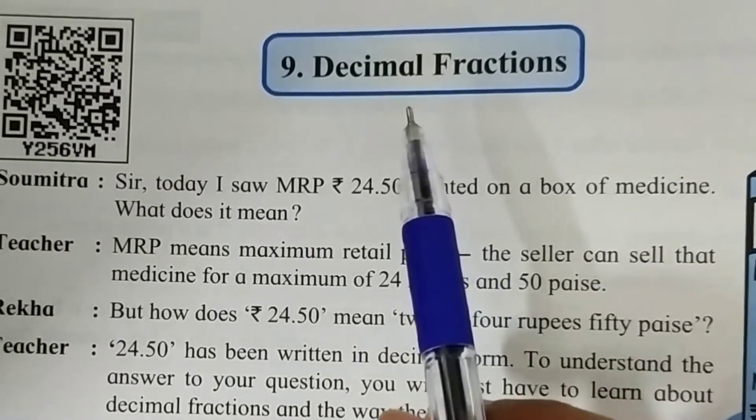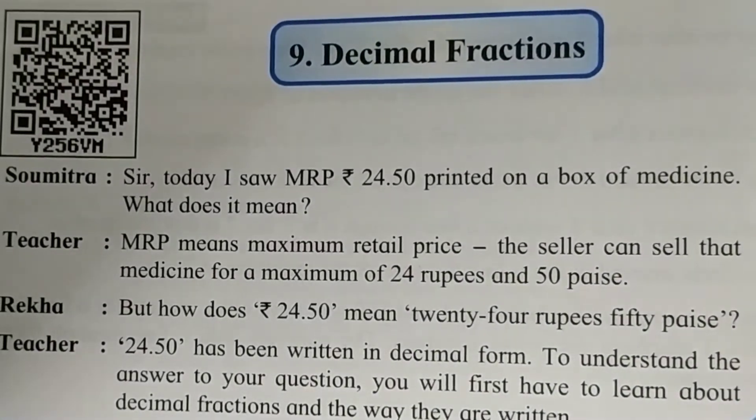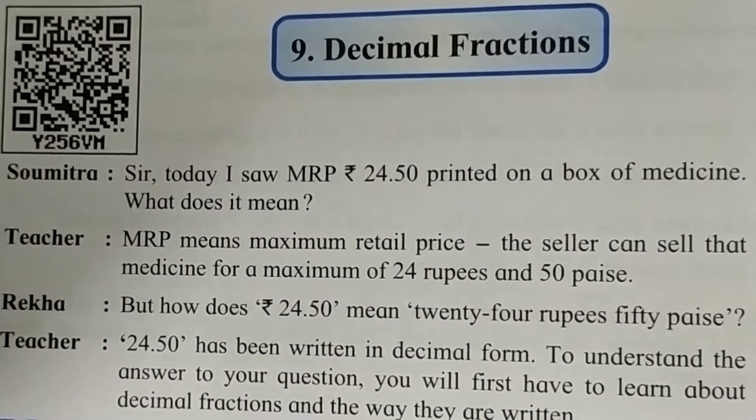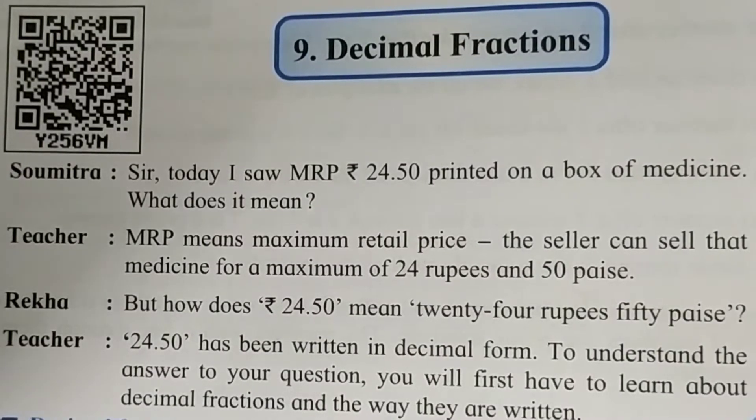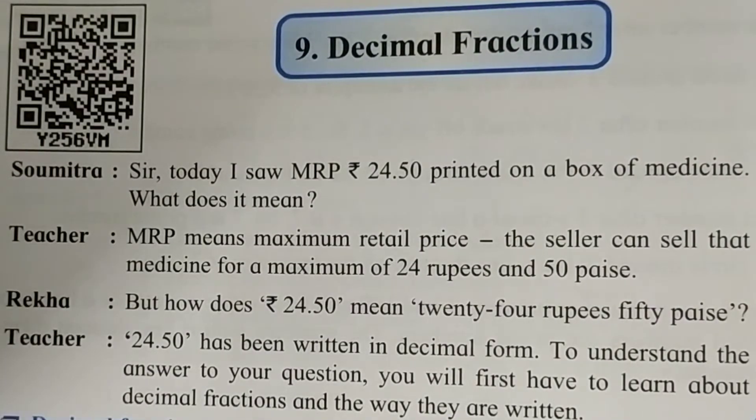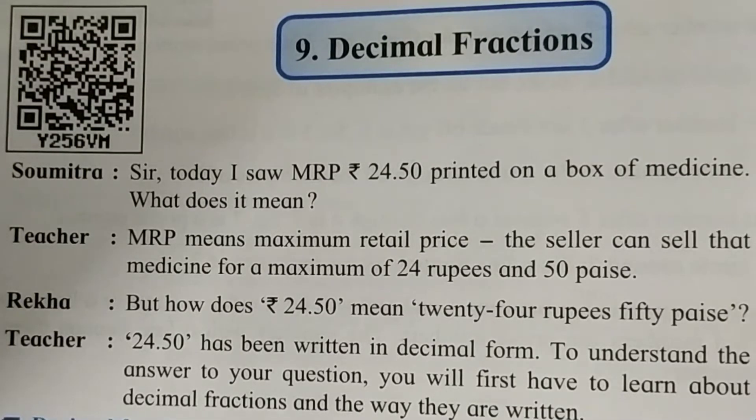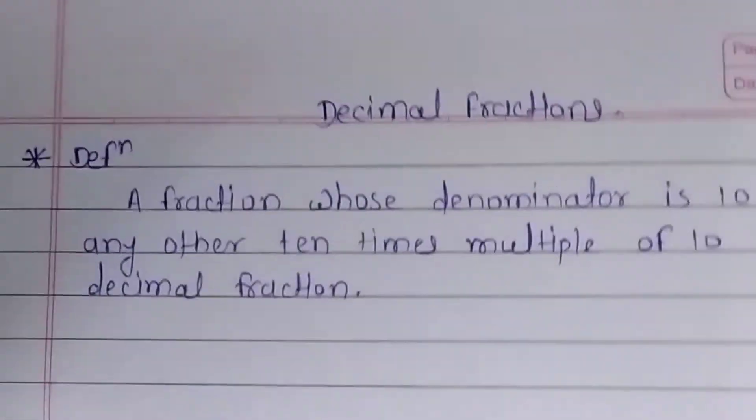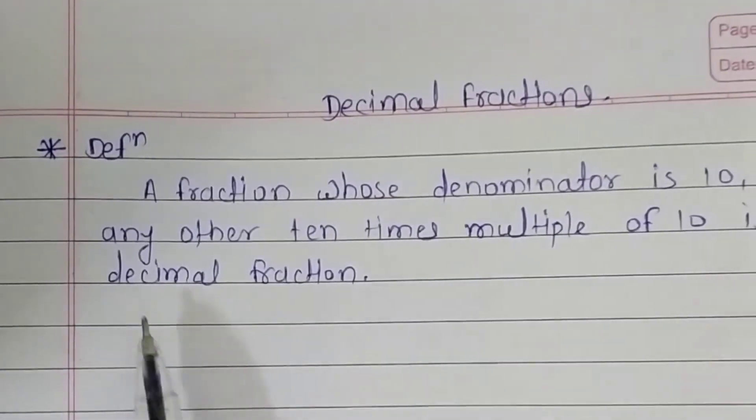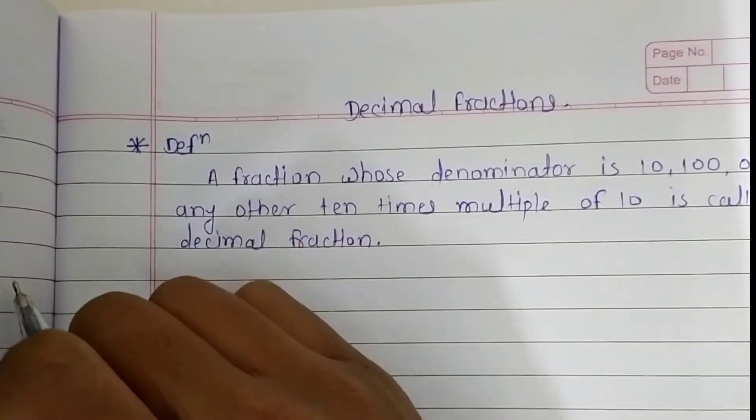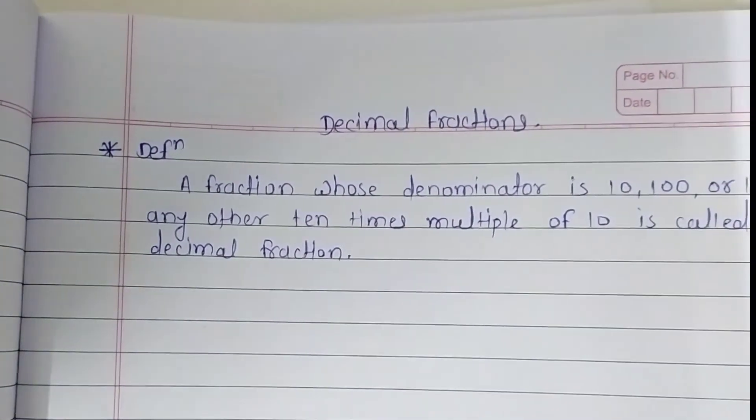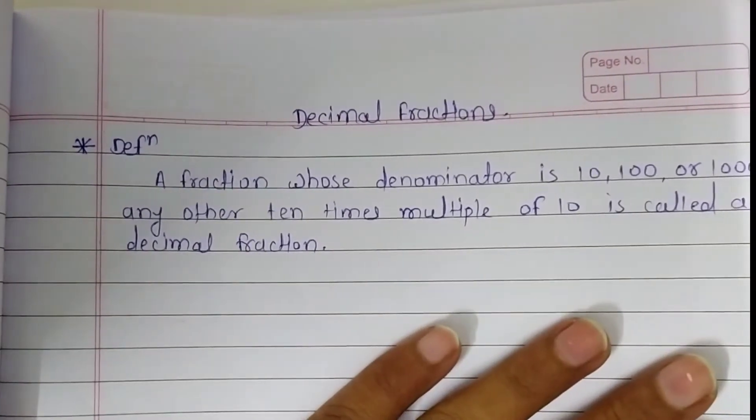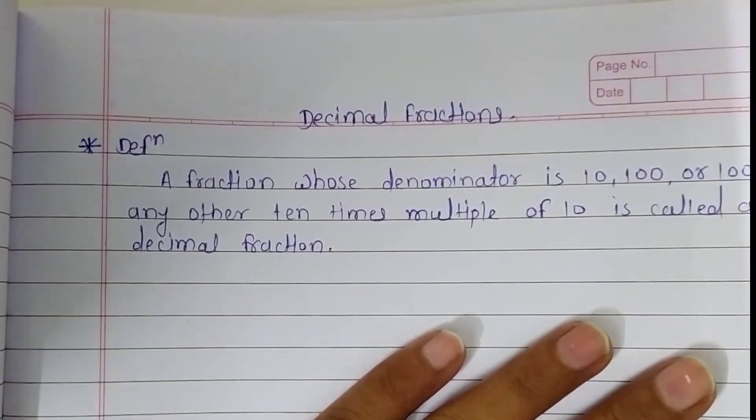So a decimal fraction is a fraction whose denominator is 10, 100, or 1000, or any other 10 times multiple. A decimal fraction is a fraction whose denominator is 10, 100, or 1000, or any other 10 times multiple of 10.